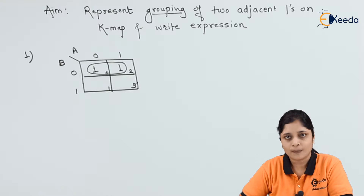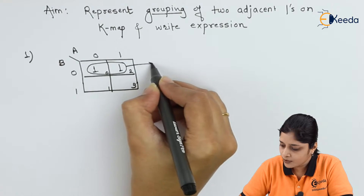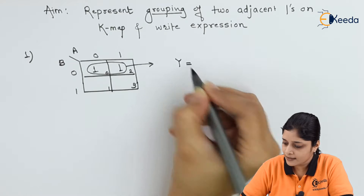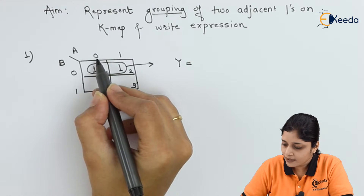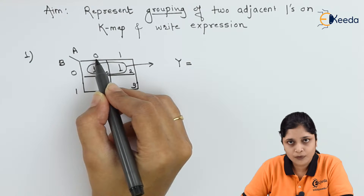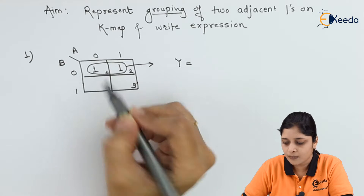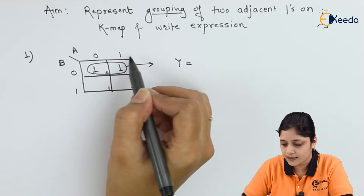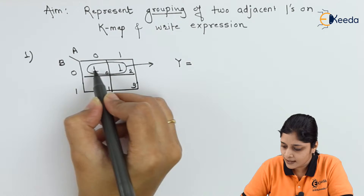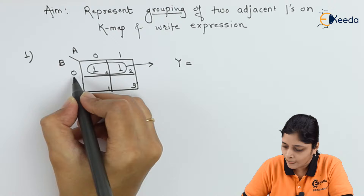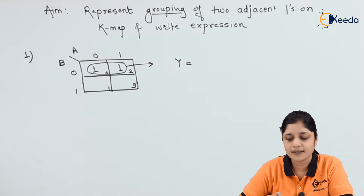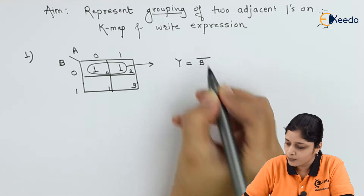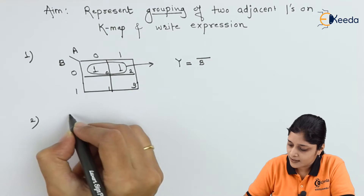Now, how to write the equation for this grouping. You will write Y as: A is zero for the first box and one for the second box, so A is changing — A is not the same. But B is zero for this one and also zero for the next one, so we'll write Y equals B-bar only.